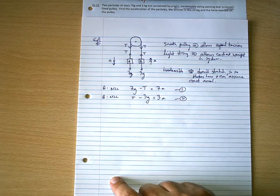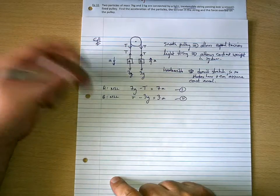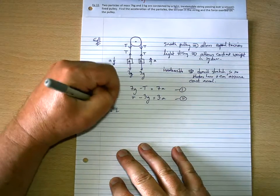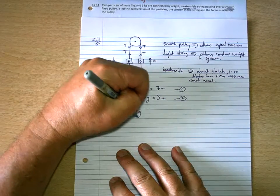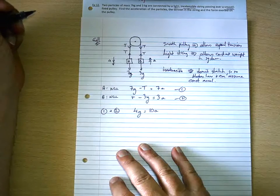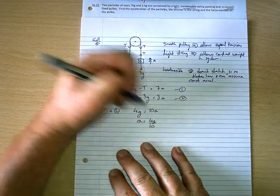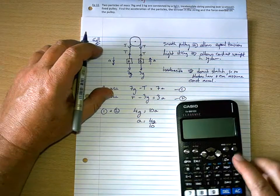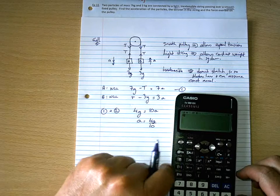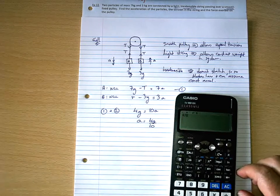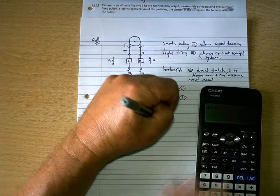So, we've got two equations, two unknowns, T and A. The easiest thing to do here is add them, because I've got a positive T and a negative T. So, if I say 1, add 2, I get 7g minus 3g is 4g, equals 10a. So, A will be 4g over 10. So, I've still got acceleration due to gravity, saved as A. So, that's going to be 4a divided by 10 equals 3.92.